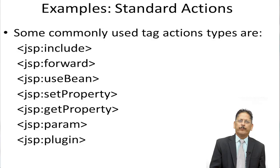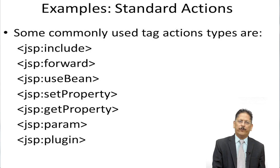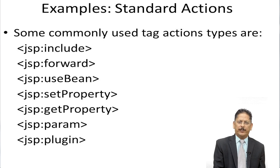Now let's look at some standard actions. JSP colon include, JSP colon forward, JSP colon useBean for the JavaBean case, setProperty and getProperty as part of useBean, and parameter as seen in the previous example. Plugin is used when we need to include an applet program in JSP.